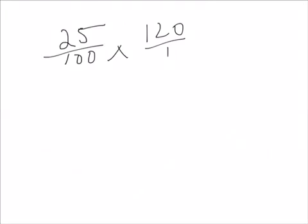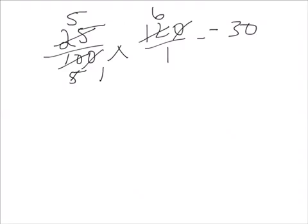25% chose basketball. So it's 25 over 100 times 120 over 1. Let's simplify. Cancel out the zeros. Let's have a look. 2 goes into 10, 5 times. 2 goes into 12, 6 times. 5 goes into itself once. 5 goes into 25, 5 times. And 5 times 6 is 30. So 30 kids chose basketball.